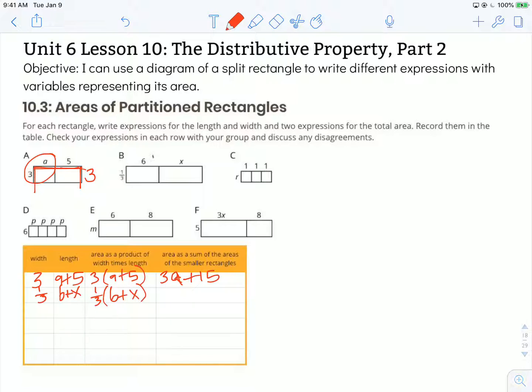Or we could look at the area of each rectangle and then add them together to get the combined area of the entire rectangle. So I have 1/3 of 6, which is the same thing as 6 divided by 3, which is 2. And we're going to add that to 1/3 of x, which is just 1/3 times x.